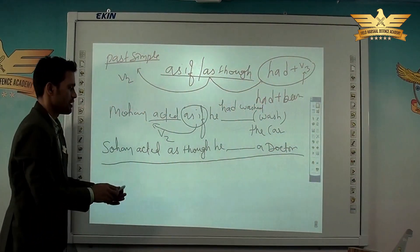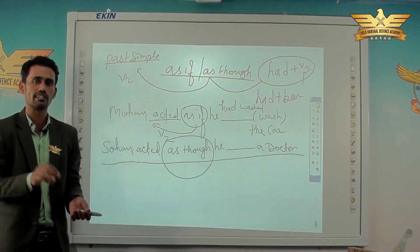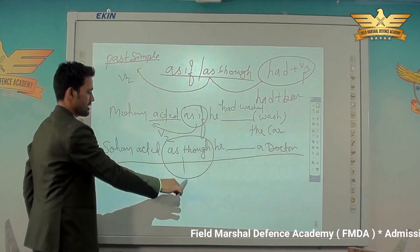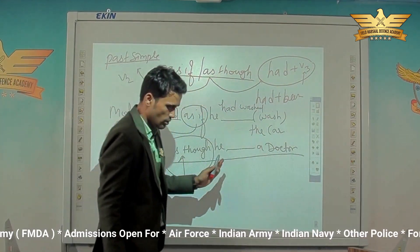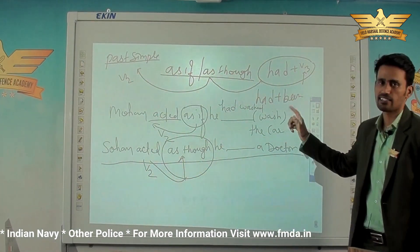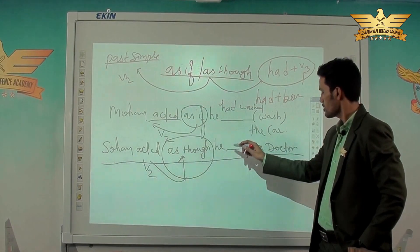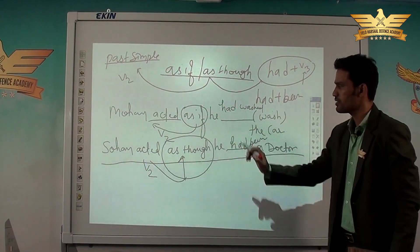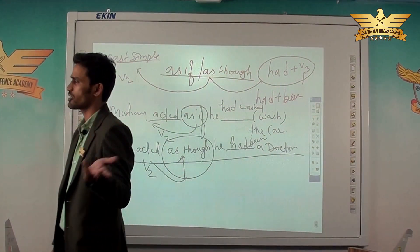Another example: 'Sohan acted as though he... a doctor.' Here 'as though' is preceded by 'acted' — past simple tense. So it must be followed by 'had' plus the third form if action is present, or 'had been' if no action. There is no action here, so we write 'had been.' The complete sentence is: 'Sohan acted as though he had been a doctor' — meaning Sohan acted as if he were some doctor.